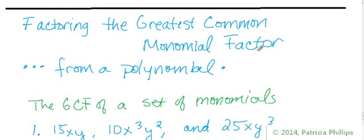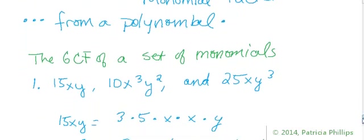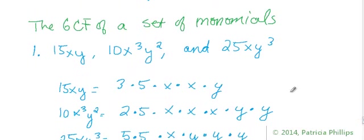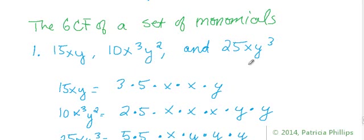First of all, we're going to start off looking at these problems. This question says just to find the greatest common factor of a set of monomials — this is your introductory type of question. Here are the monomials: 15x²y, 10x³y², and 25xy³.